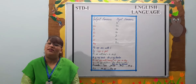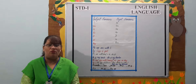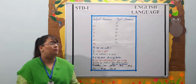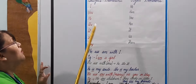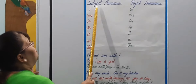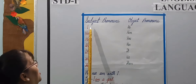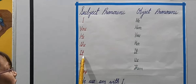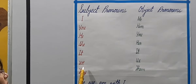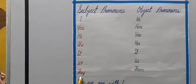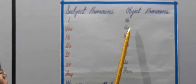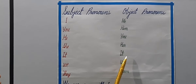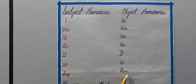Let us see what are subject pronouns and object pronouns. Subject pronouns: I, you, he, she, it, we, they. Object pronouns: me, him, you, her, it, us, them.